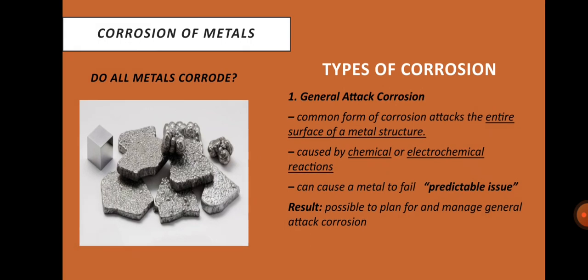Do all metals corrode? All metals can corrode. Some, like pure iron, corrode quickly. Stainless steel, however, which combines iron and other alloys, is slower to corrode and is therefore used more frequently. A small group of metals, called the noble metals, are much less reactive than others. As a result, they corrode rarely. They are in fact the only metals that can be found in nature in their pure form.